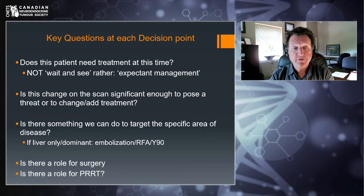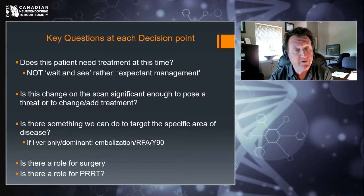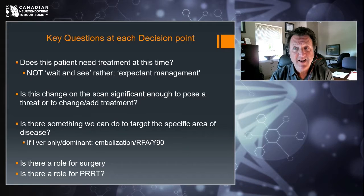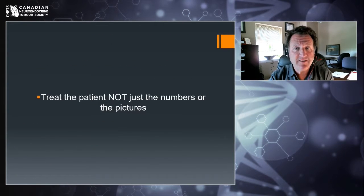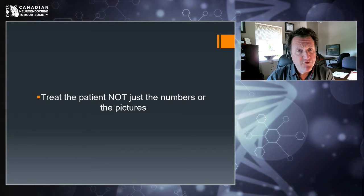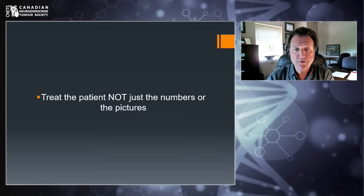For patients with neuroendocrine tumors, many times the liver is a primary focus of disease, so sometimes we can target the liver specifically — and that should always be considered when thinking of adding or changing treatment. Finally, is there a role for surgery and is there a role for PRRT? These are the five big questions your oncologists are asking all the time, and one major important concept is that we should be treating the whole patient, not just the numbers or the pictures.